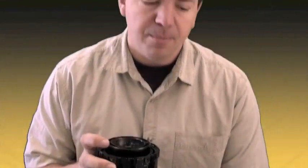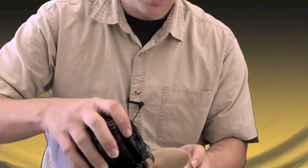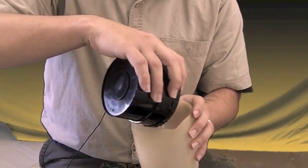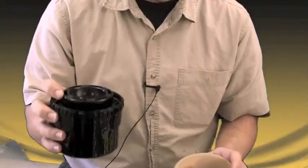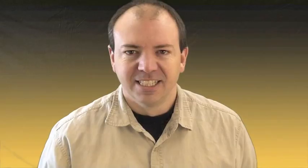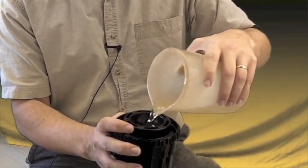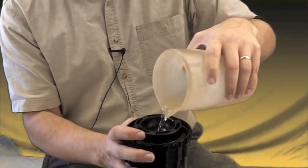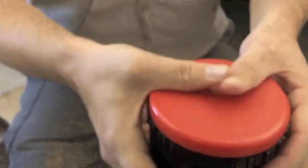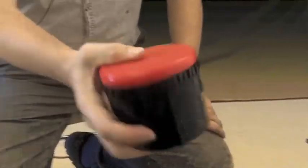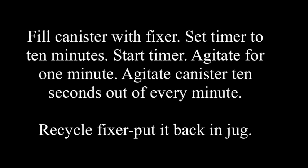We've just completed our developing process. What we need to do is dump our developer either down the drain with some water or into a container so that you can completely empty the container. The next step is to fill it with water. Our next step is to put water into the canister. Just go ahead and fill it up. The main process we're doing is just rinsing the film. Just fill it up until you can see the water into the canister. Put your lid on there. You're just going to agitate this continuously for 30 seconds, getting all the chemicals off the film.